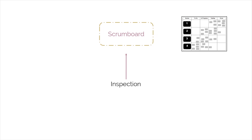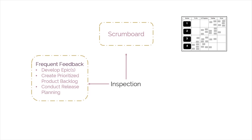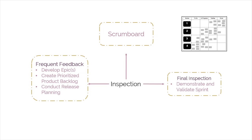The collection of feedback from the customer and other stakeholders during the Develop Epics, Create Prioritized Product Backlog, and Conduct Release Planning processes give additional opportunities for inspection. The final point of inspection comes during the Review Meeting, when the team seeks approval of the deliverables by the product owner and the customer in the Demonstrate and Validate Sprint process.